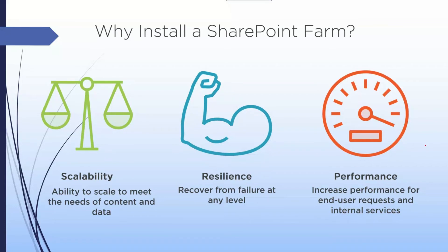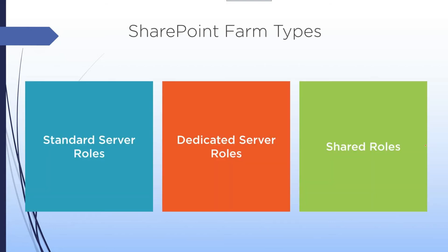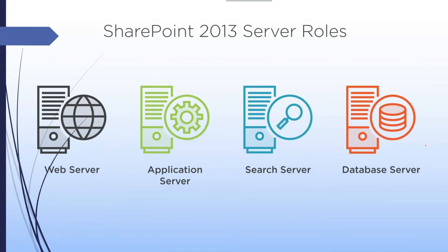SharePoint on-premises has a farm with different types. The first is standard farm, where all server roles are on one general server. The second is dedicated, where each server is dedicated to one role. The third is shared, where server roles are shared. For the standard farm, SharePoint is installed on a general server that handles all roles together.